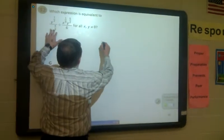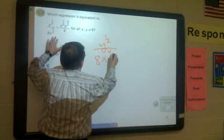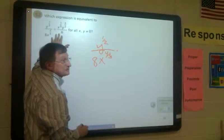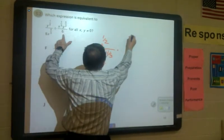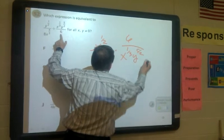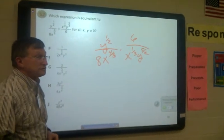I got y to the one-half over 8x to the four-thirds times, watch this, six on top, x to the one-third, y to the five-halves. Okay, so far, so good?